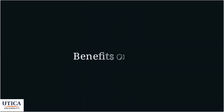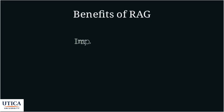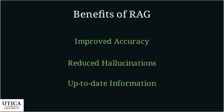RAG offers several key benefits. Improved accuracy — RAG reduces errors by grounding the LLM in real-world information. Reduced hallucinations — the LLM is less likely to make things up when it has access to reliable context. Access to up-to-date information — RAG allows LLMs to stay current by integrating new knowledge. Source citations — RAG systems can often provide citations to the source documents, increasing transparency and trust.